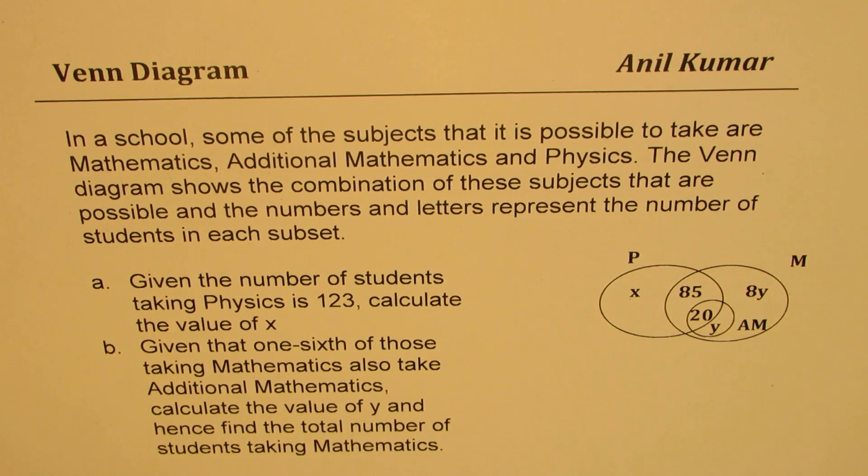The question here is, in a school, some of the subjects that it is possible to take are Mathematics, Additional Mathematics and Physics. The Venn Diagram shows the combination of these subjects that are possible and the numbers and letters represent the number of students in each subset.